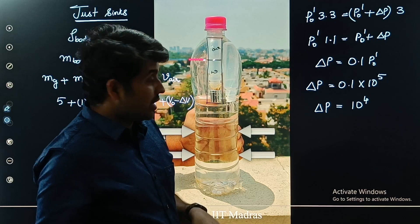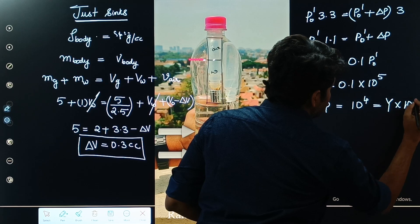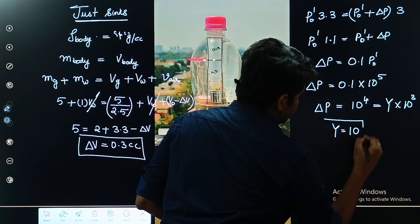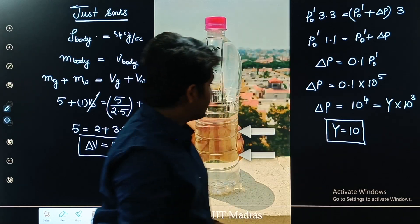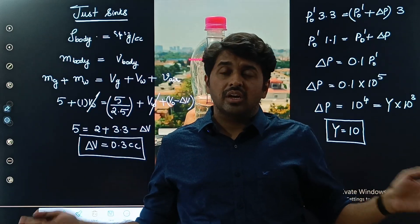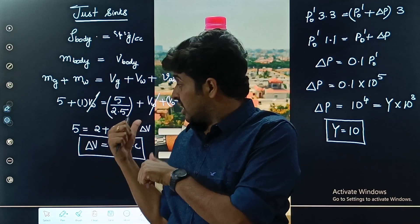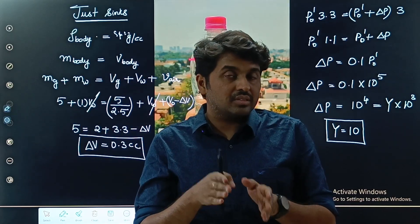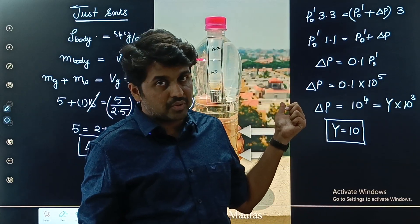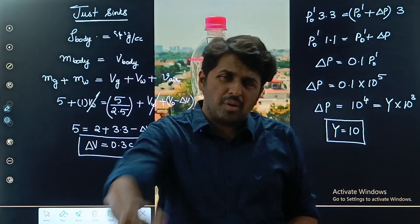So y equals 10 (since ΔP = y × 10^3, y = 10). This is the JEE Advanced question, and the inspiration for it is actually this Cartesian diver experiment. I hope you all have understood this — see you in the next video. Bye-bye.